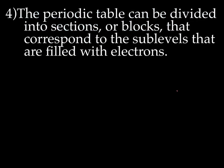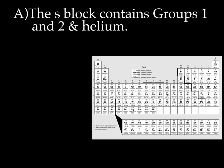The periodic table can be divided into sections or blocks that correspond to the sublevels that are filled with electrons. The first block is the S block. The S block contains groups 1, 2, and helium. The reason they're called the S block is because of the valence electrons.